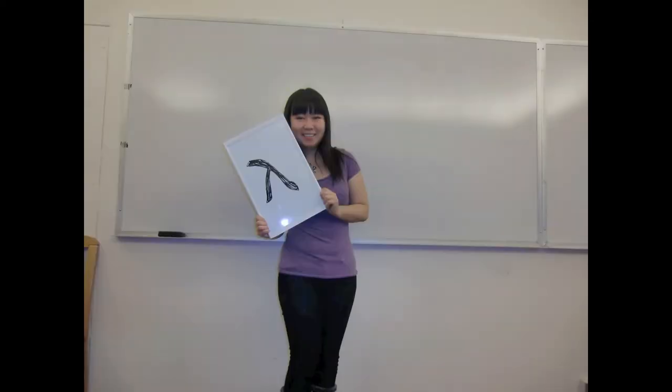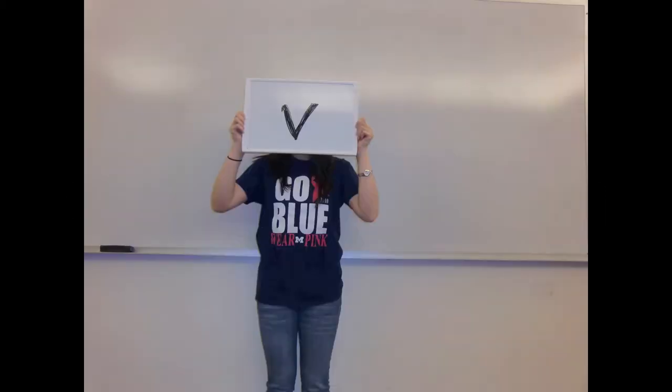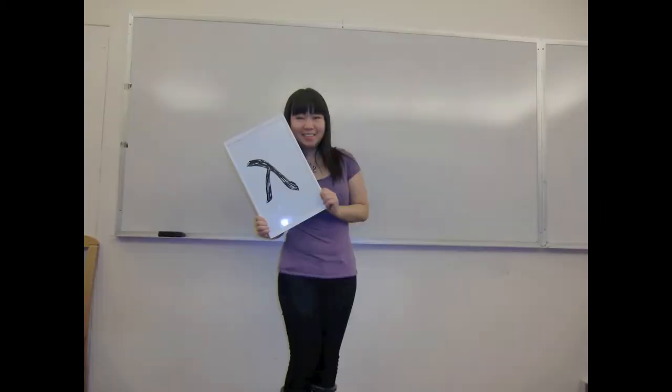Frequency and wavelength are inversely proportional given by the equation c equals nu times lambda, where c is the speed of light, which is 3 times 10 to the 8 meters per second. Nu is frequency and lambda is wavelength.